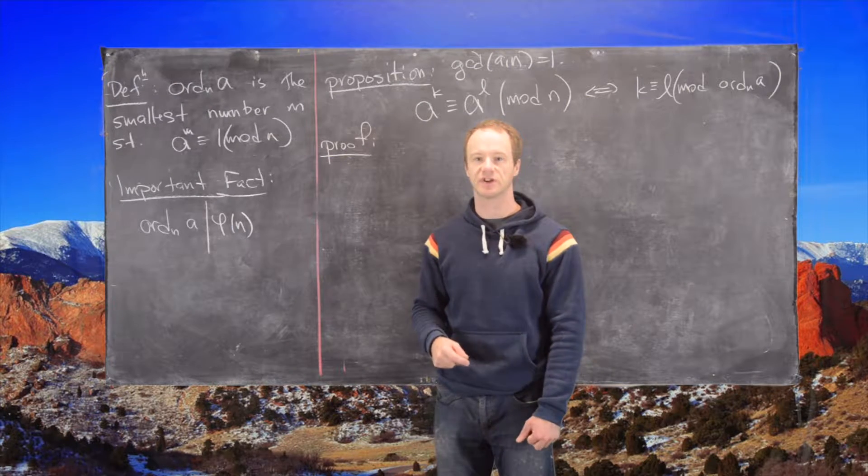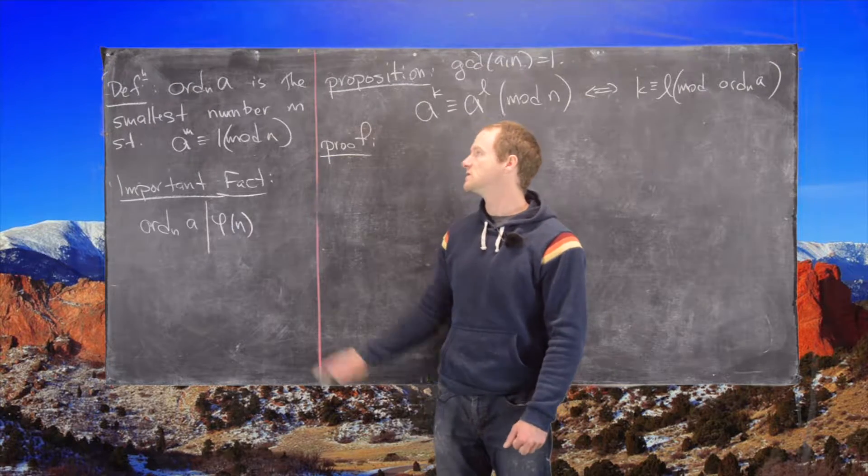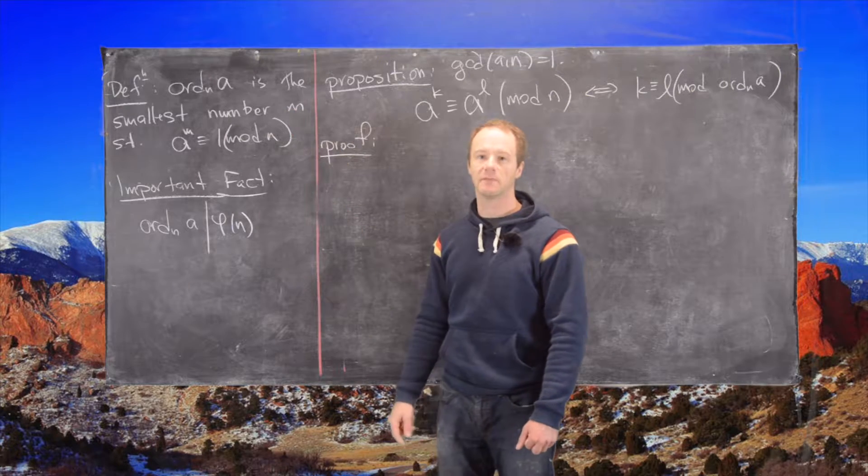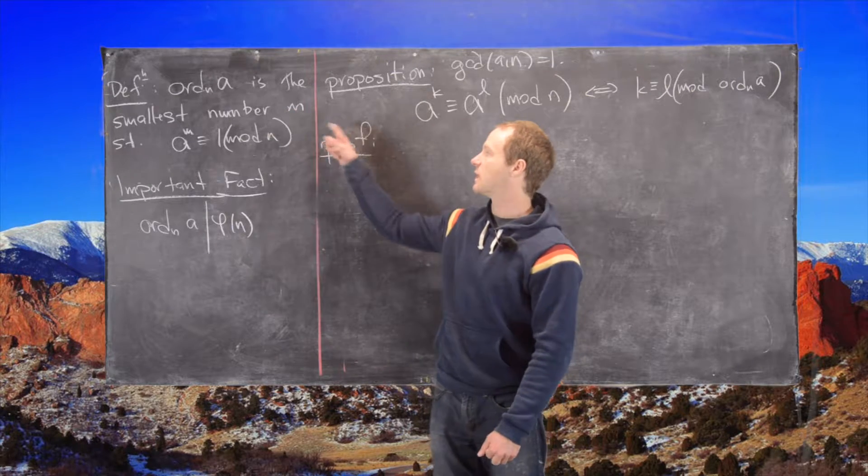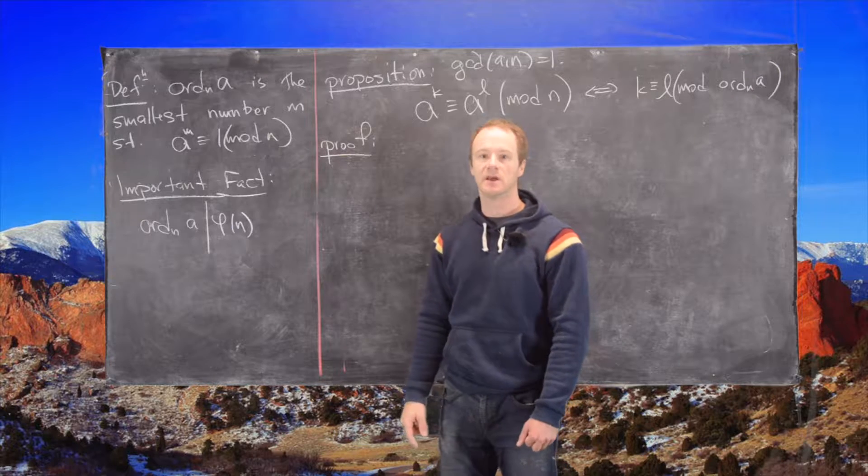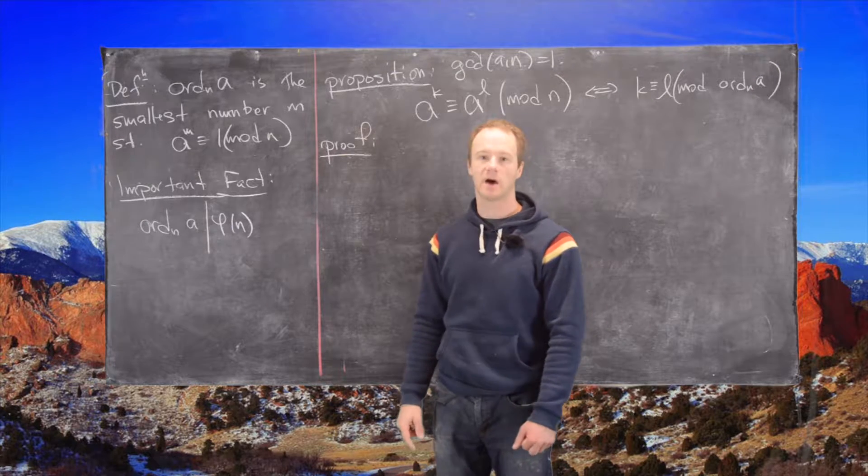Okay, in this video we're going to look at a proposition involving the order of an element. So let's recall that the order of a modulo n is the smallest number m such that a to the m is congruent to 1 mod n.